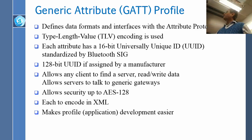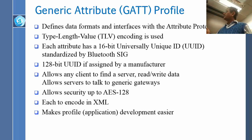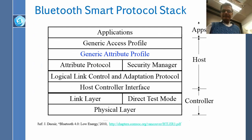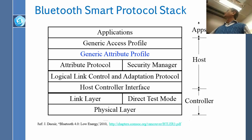This allows any client to find a server and read and write data, and allows servers to talk to generic gateways. Everything can become generic, and you can have AES-128 encryption with everything encoded in XML. Now you can develop new applications very fast without having to worry about the whole thing being defined by Bluetooth. All the Bluetooth SIG does is give a standard number to each attribute. The attribute protocol passes that information, and the access profile is basically to access the same thing, with applications on top.